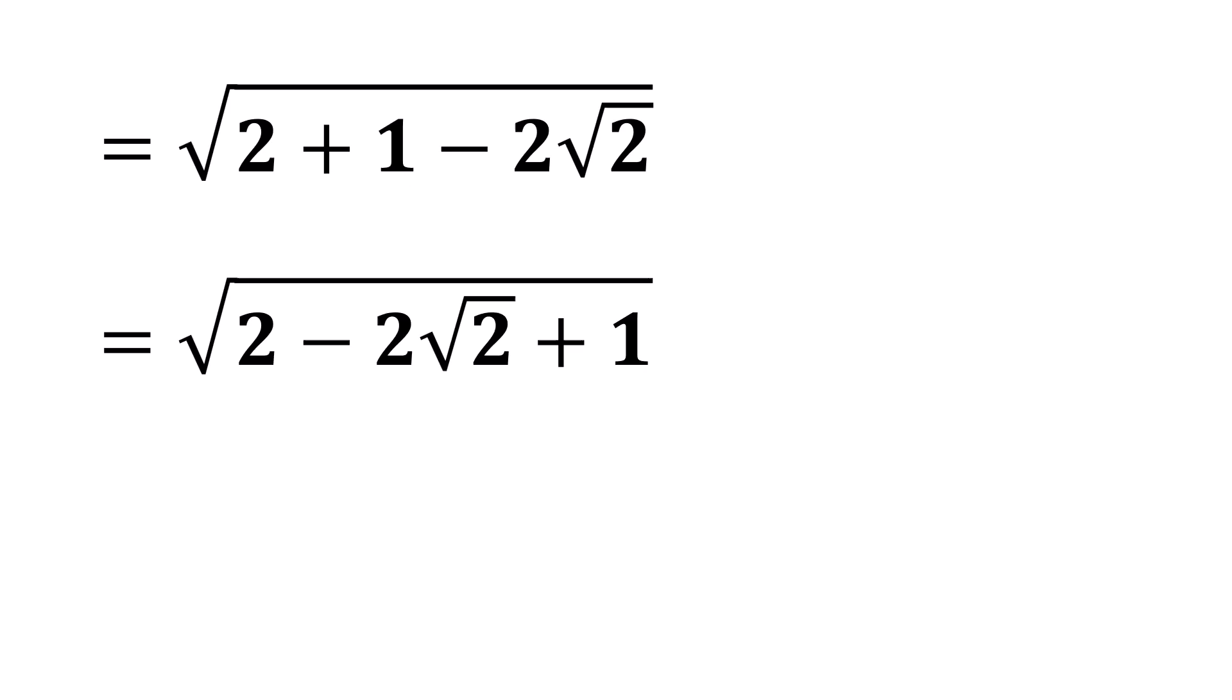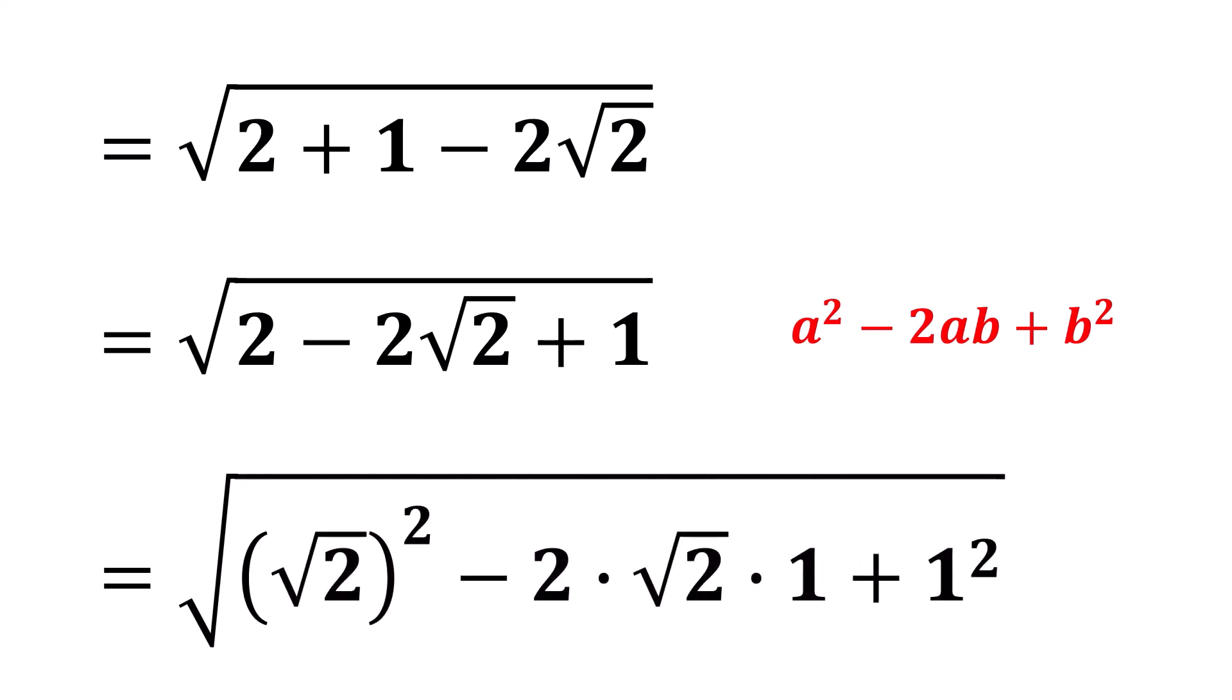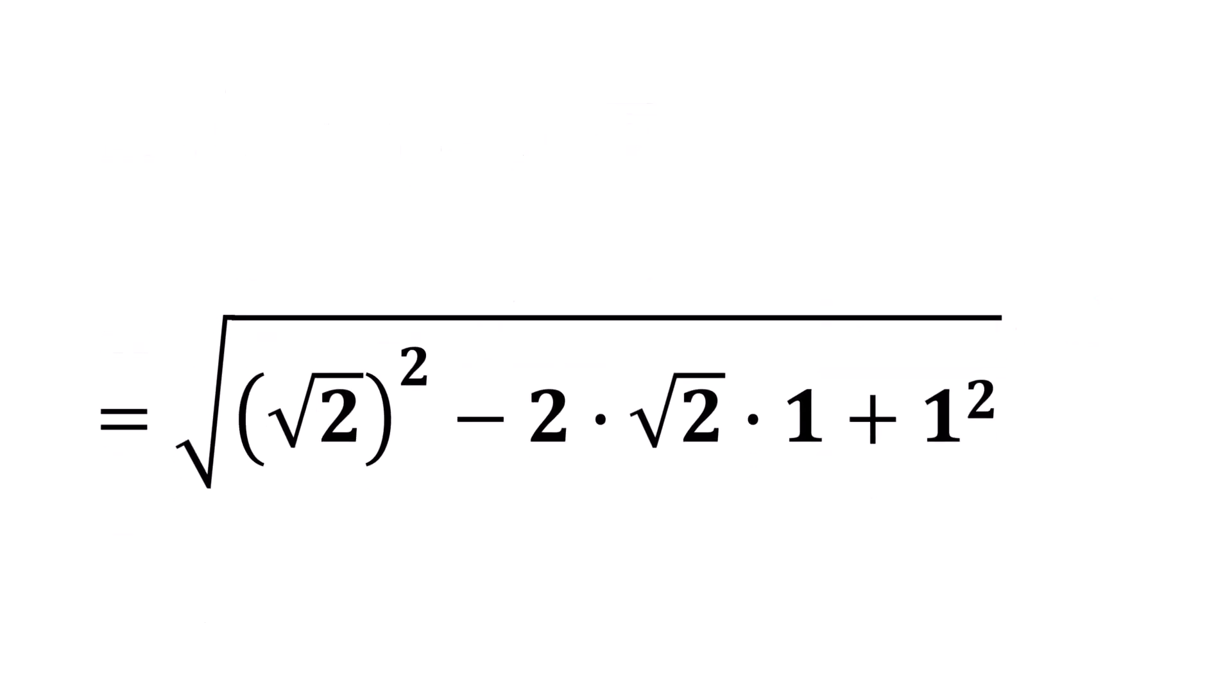To rewrite the inside terms in the form A squared minus 2ab plus b squared, we get the square root of 2 whole squared minus 2 times the square root of 2 times 1 plus 1 squared.